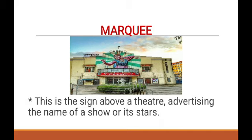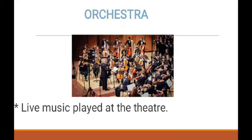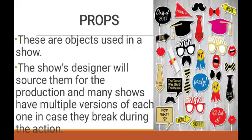The film stars are also advertised at the front — that is called the marquee. Next is the orchestra — orchestra is nothing but live music played at the theater. Next are the props — props is short for property.